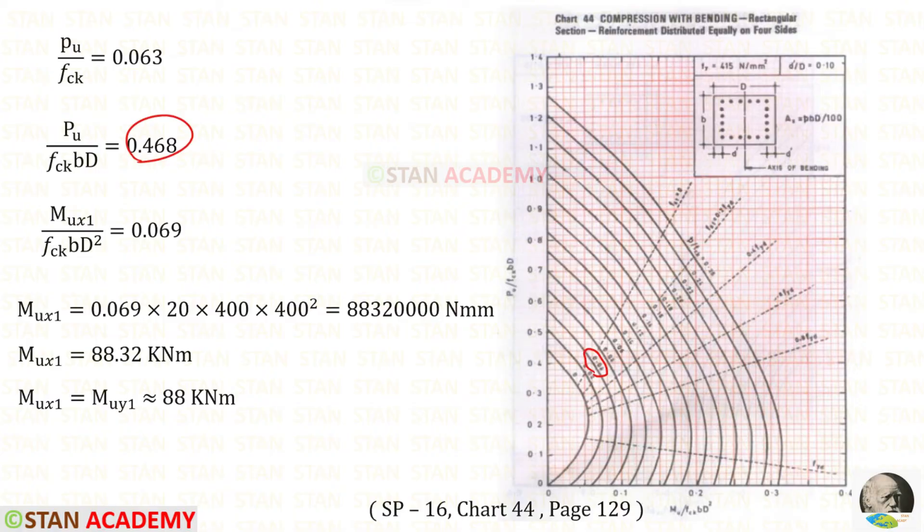The line should pass 0.06 and we have to extend a little more because 0.063 is more than 0.06. Now we can make a vertical line. This point is near to 0.07, but it is not exactly 0.07, little before that. In this case, we can assume that it is 0.069. In this way, we can find MUX1.